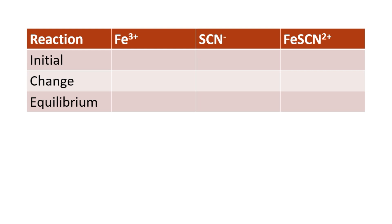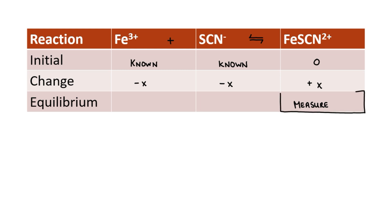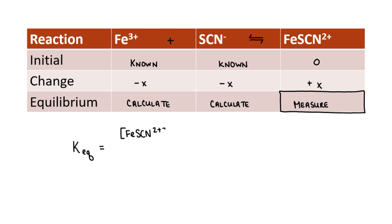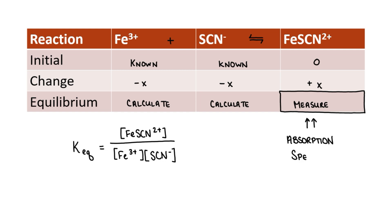The value of the equilibrium constant can be determined by mixing known concentrations of iron 3-ions and thiocyanate ions and then measuring the concentration of the FeSCN²⁺ ions at equilibrium. We don't start with any FeSCN²⁺ ions — we lose iron and thiocyanate ions and gain this FeSCN²⁺ complex. The concentration of the FeSCN²⁺ complex at equilibrium will be proportional to the intensity of the red color.